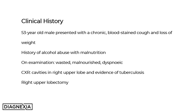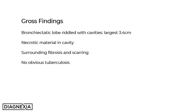Chest X-ray revealed multiple cavities, especially in the right upper lobe, and there was also evidence of tuberculosis. A right upper lobectomy was performed. The gross findings of the specimen showed a bronchiectatic lung lobe riddled with multiple cavities, the largest of which measured 3.4 cm.